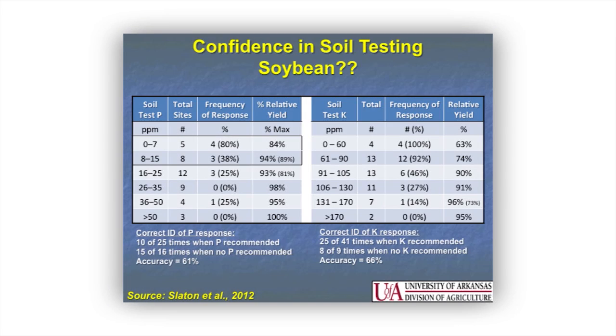Regarding confidence in soil testing: if you submitted soil samples to the University of Arkansas lab, when they recommended K they were correct 25 out of 41 times. When they did not recommend K, they saw a positive yield response 8 out of 9 times, for an overall accuracy of 66%. If you were playing the lottery and I told you you had a 7 out of 10 chance of winning, would you like those odds? I would.